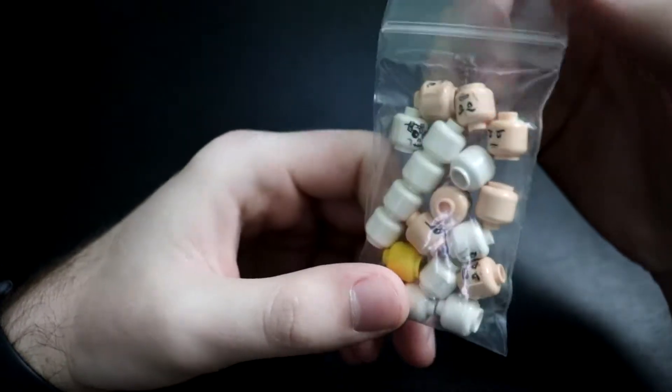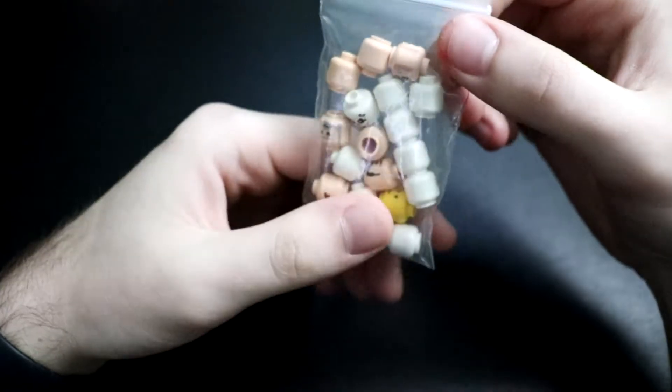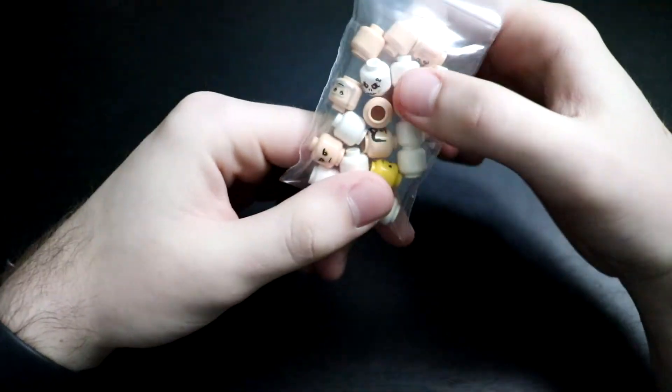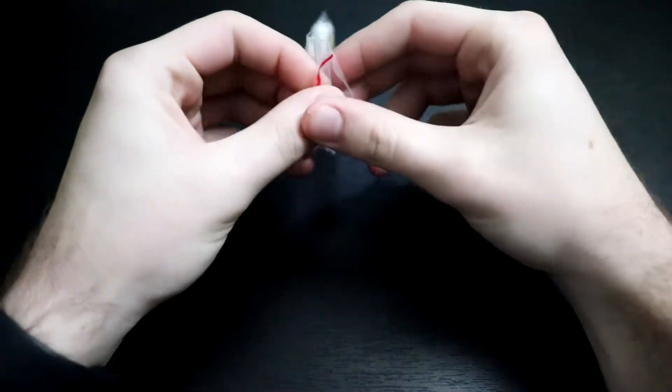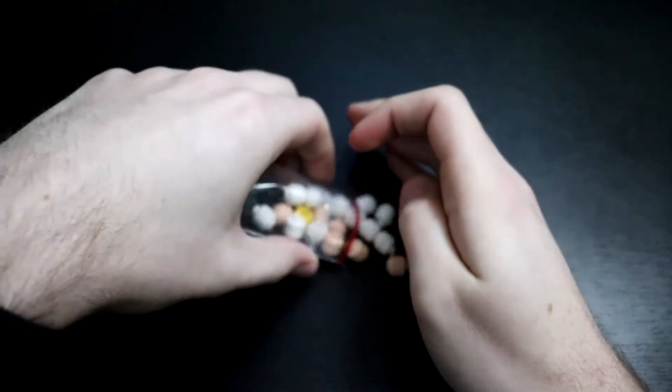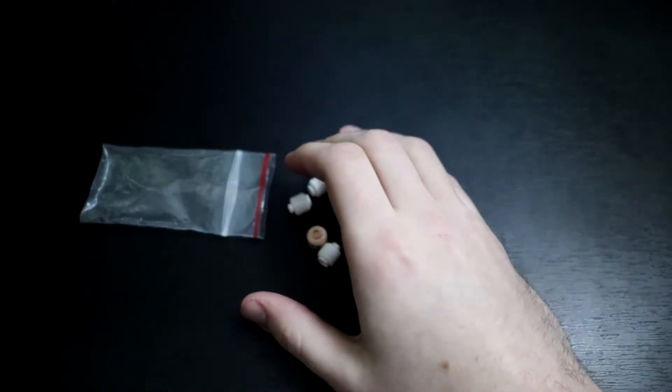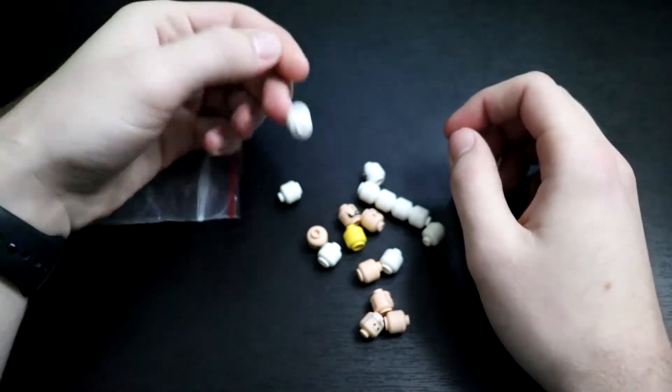So, I needed a bunch of the light nougat flesh colored heads for an animation I'm working on, as well as these plain white ones. So, let's go ahead and just look through these real quick. Make sure everything's here and all that. Did this come with an invoice? Did not come with an invoice. That's okay. I can double check everything later, so...